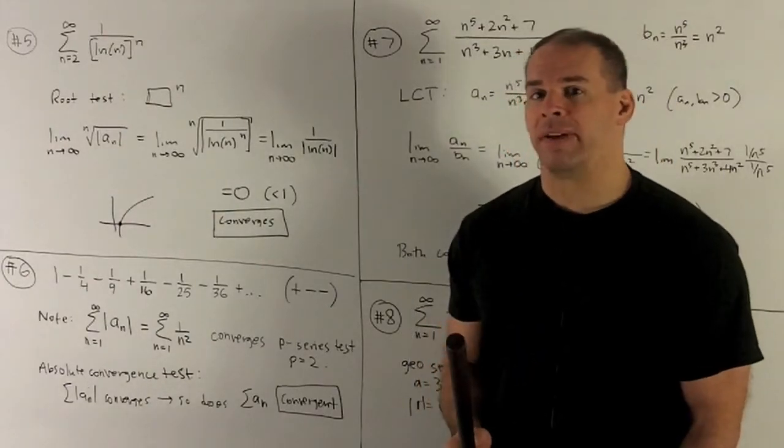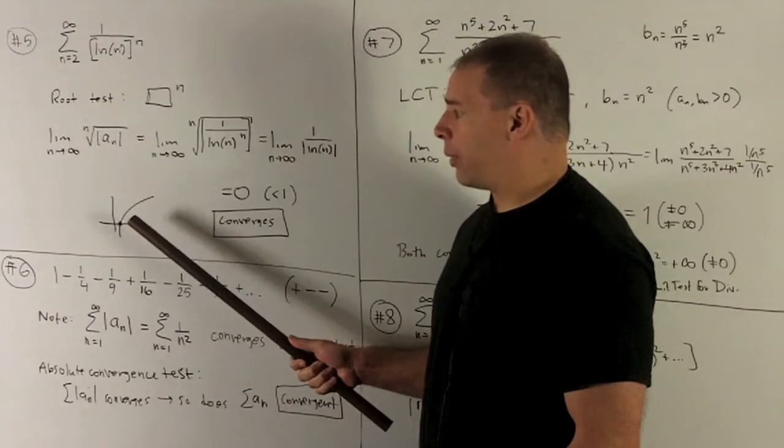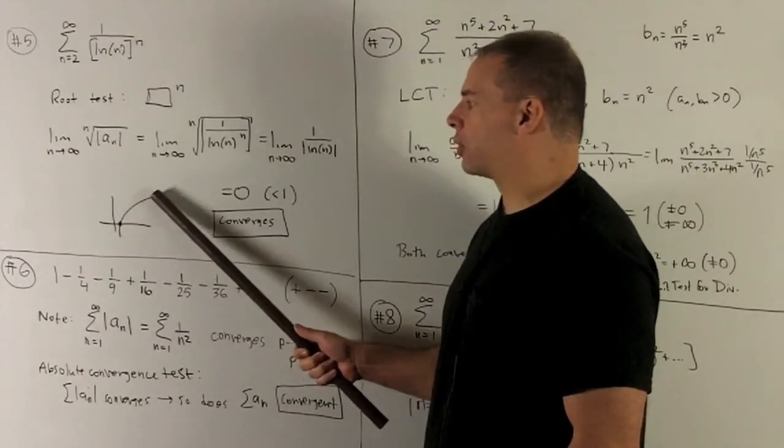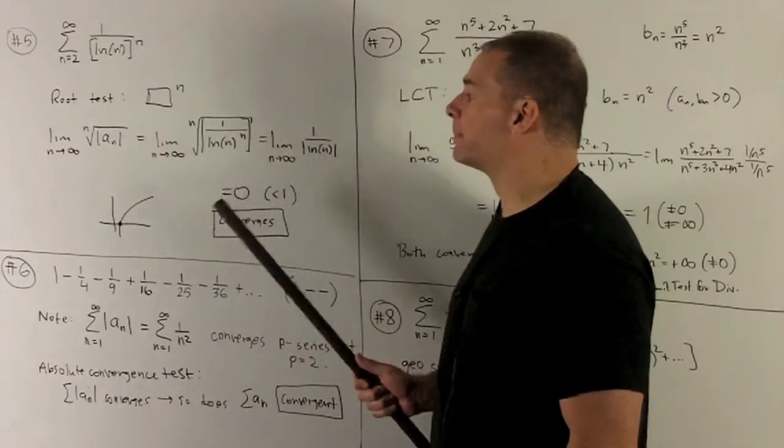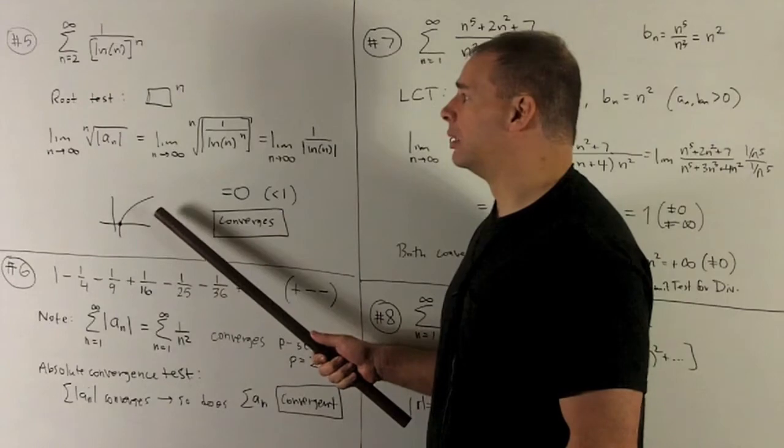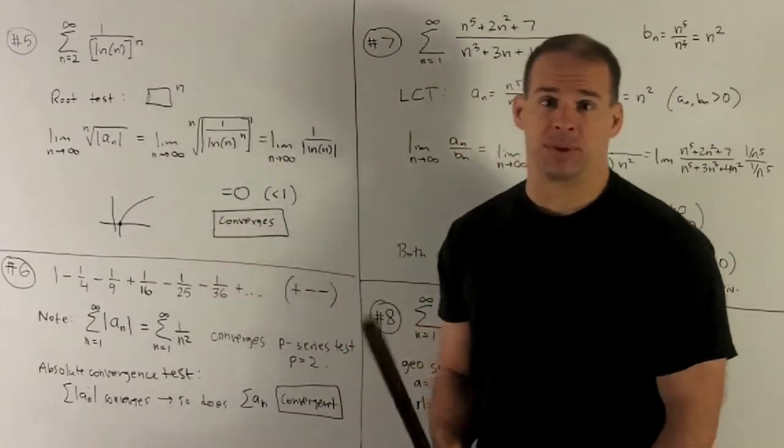We don't need to worry about the absolute value signs. If we look at the graph of natural log, at one it's going to be zero, and then when we go past one, it's just going to keep increasing, going off to infinity. So this is going to be positive as soon as I get past one. Since we're starting at two, not a problem. We won't need the absolute value signs.